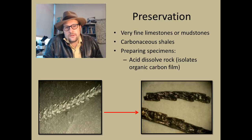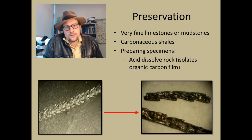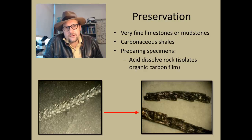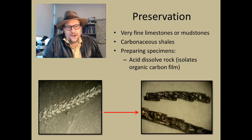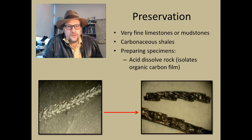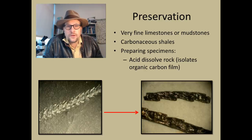In preparing specimens, paleontologists who study graptolites dissolve the rock, usually first with hydrochloric acid to get rid of the calcite cement, and then hydrofluoric acid to get rid of some of the silica. That leaves behind the organic carbon film — the original fossil. It's a very delicate process, and only a handful of specimens have been prepared this way in three dimensions. Most graptolites are found in two dimensions, squished between the layers of shale.